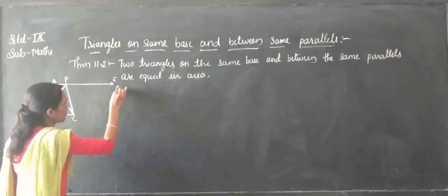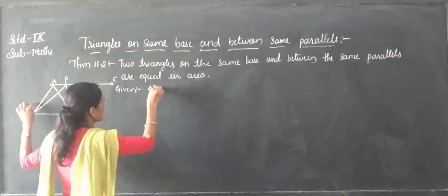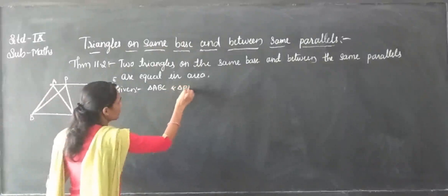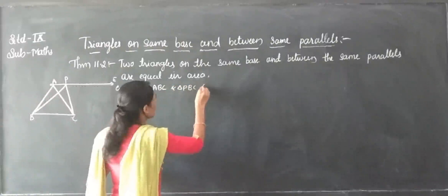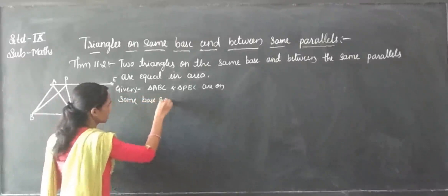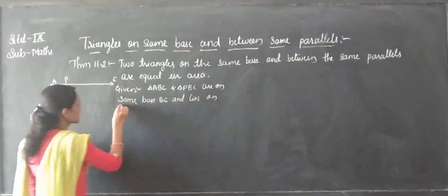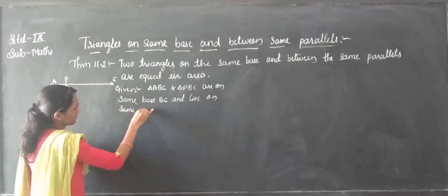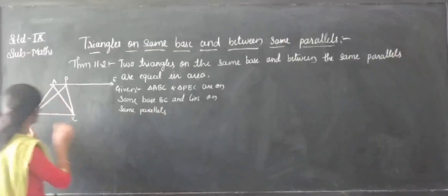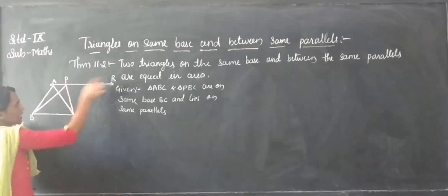So what do you want to do here? You have to write it down. Two triangles — consider triangle ABC. So, triangle ABC and triangle PBC are on the same base, which is BC, and between the same parallels, which are BC and AR.